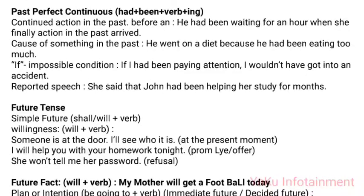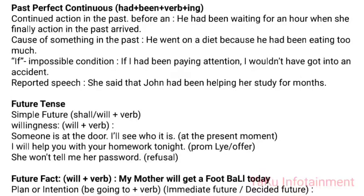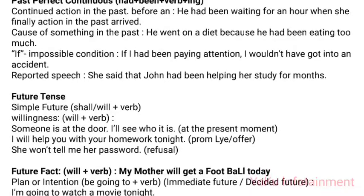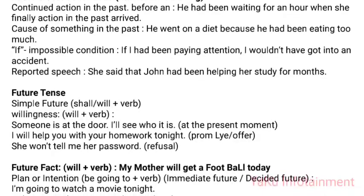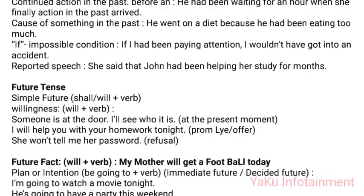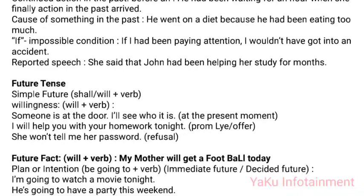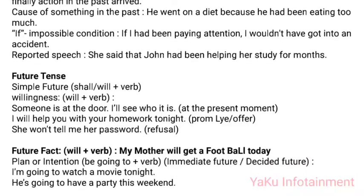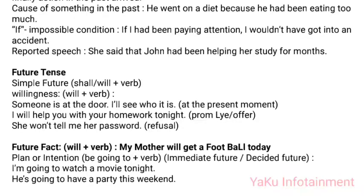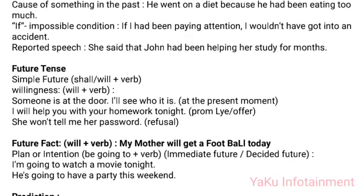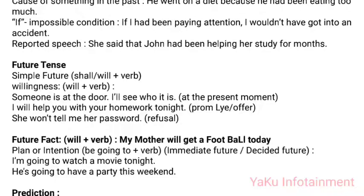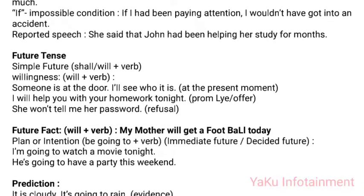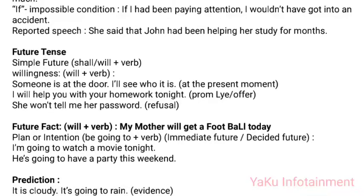Past Perfect Continuous (had + been + verb-ing). Uses: (1) Continued action in the past before another event: 'He had been waiting for an hour when she finally arrived.' (2) Cause of something in the past: 'He went on a diet because he had been eating too much.' (3) Impossible condition: 'If I had been paying attention, I wouldn't have got into an accident.' (4) Reported speech: 'She said that John had been helping her study for months.'